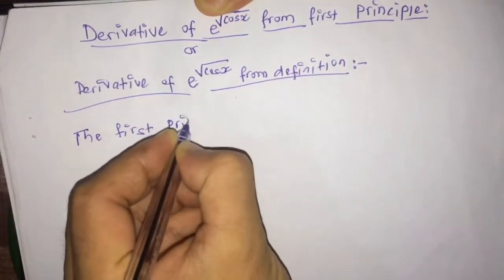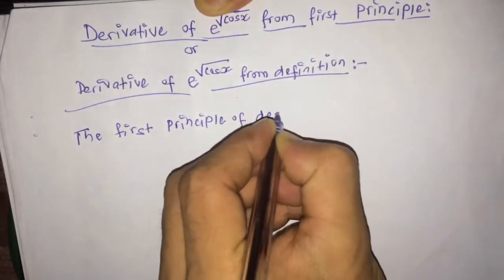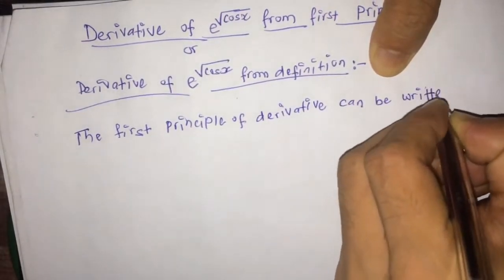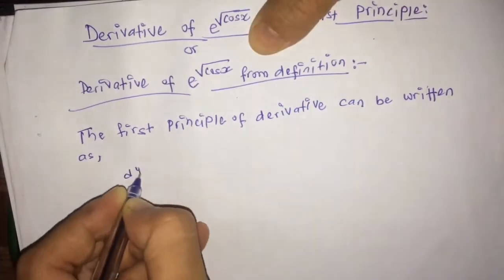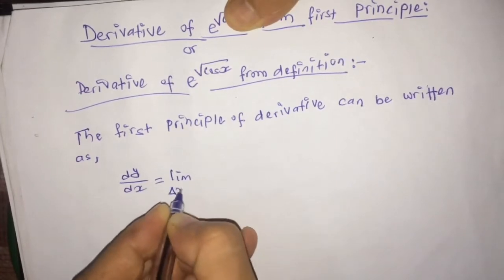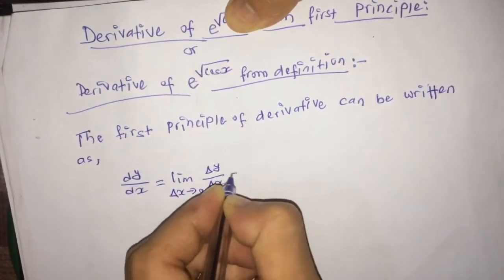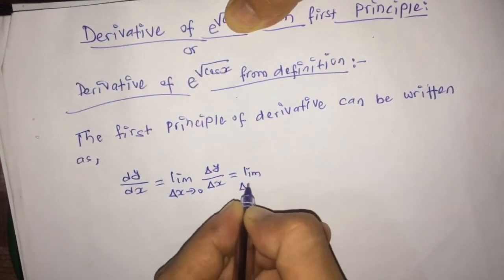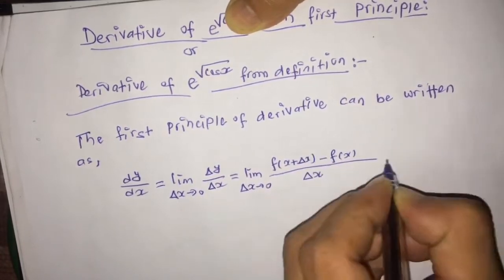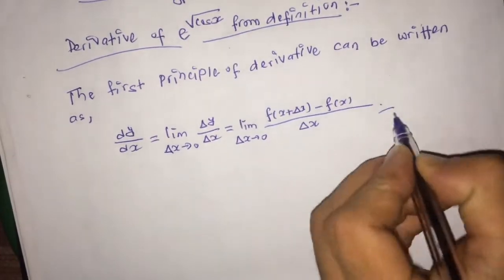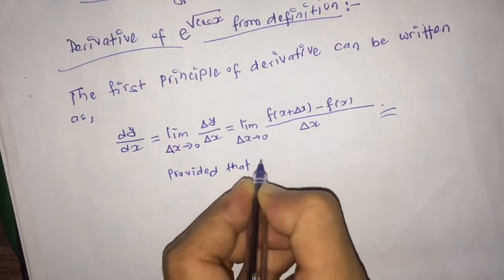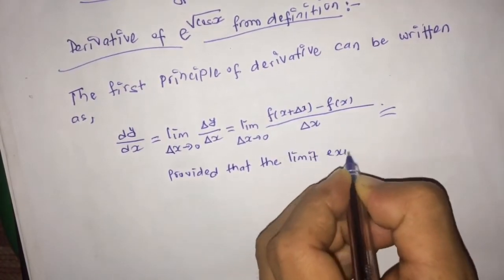The first principle of derivative can be written as dy/dx is equal to limit δx tends to 0, δy divided by δx, which equals limit δx tends to 0 of f(x + δx) minus f(x), whole divided by δx, provided that the limit exists.